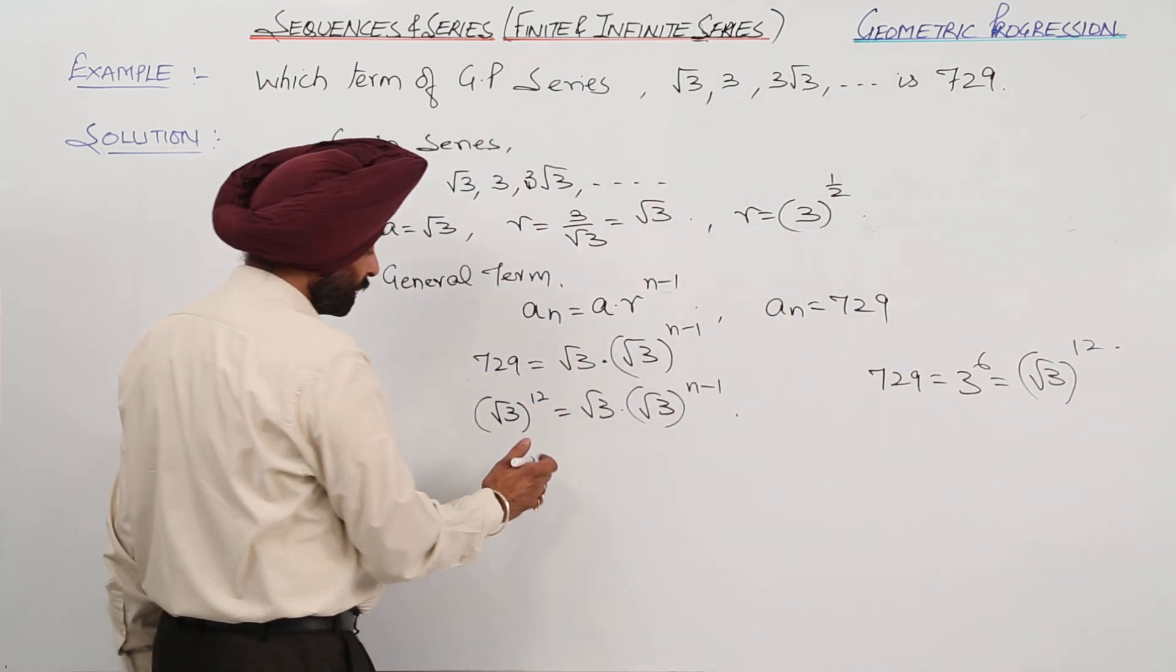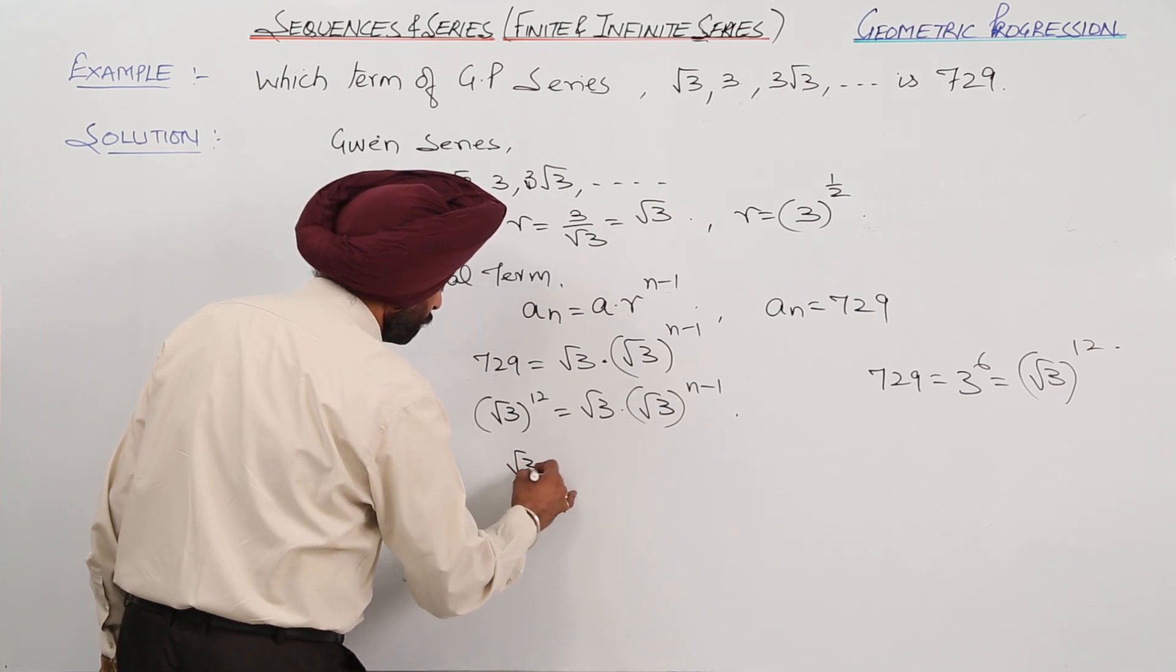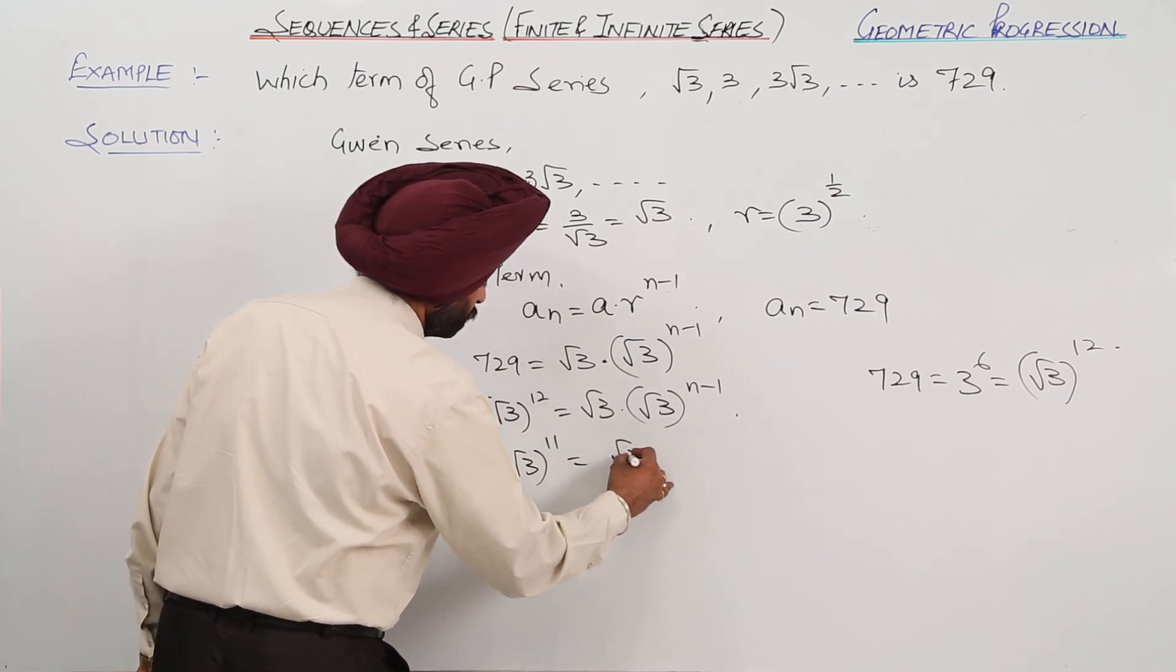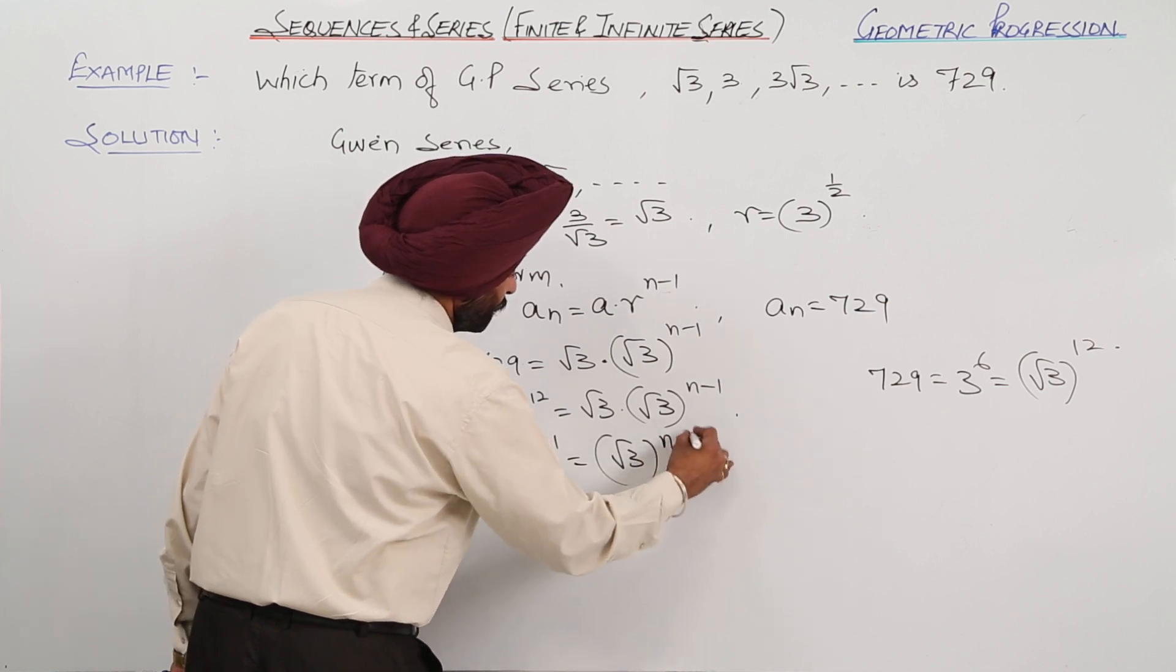Canceling one term, we are left with √3^11 = √3^(n-1).